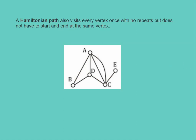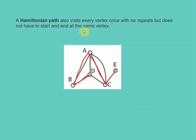Does this diagram have a Hamiltonian circuit? A circuit means we have to start and end at the same vertex. If I started at B and went to A, D, C, and E, once I go out to E there's no way to get back to vertex B without crossing back over a vertex I've already touched. Even starting at vertex E, there's no way to return to E without revisiting a vertex. So this does not contain a Hamiltonian circuit. Unfortunately, we do not have any theorems that tell us if a graph contains a Hamiltonian circuit or path — we simply have to try it and see.